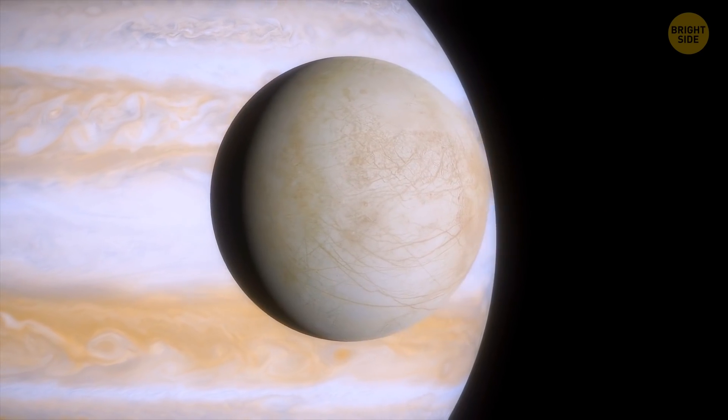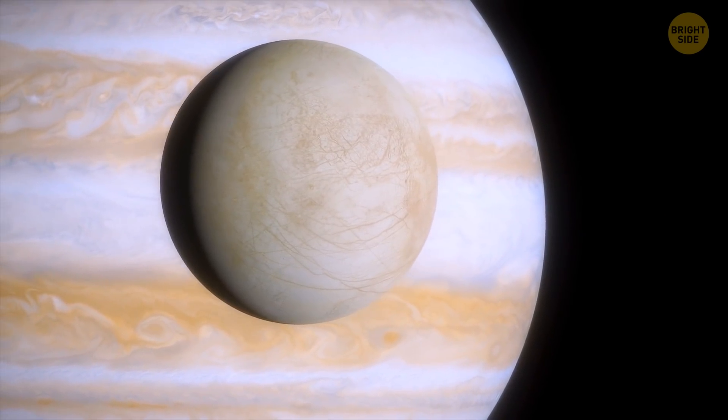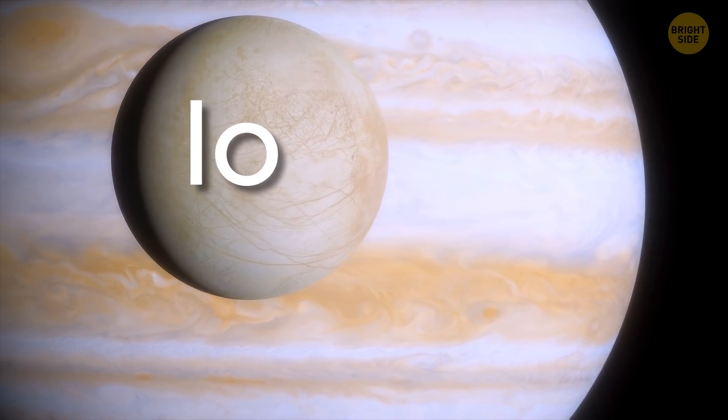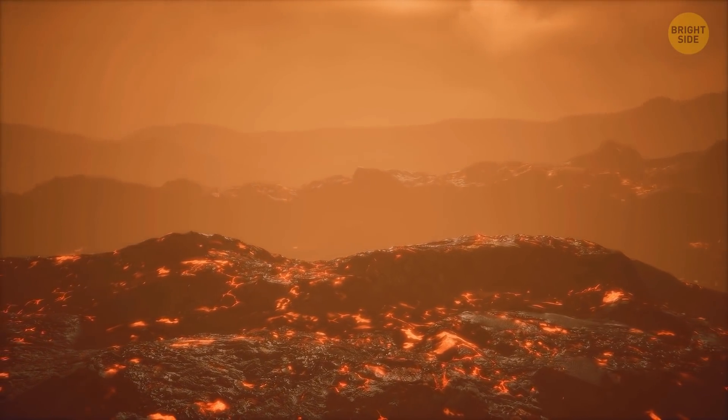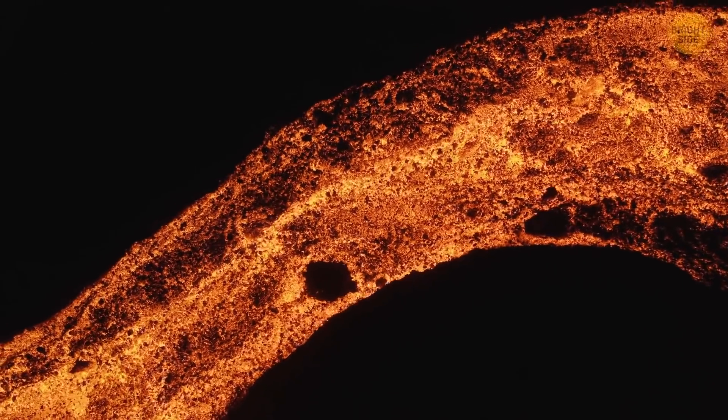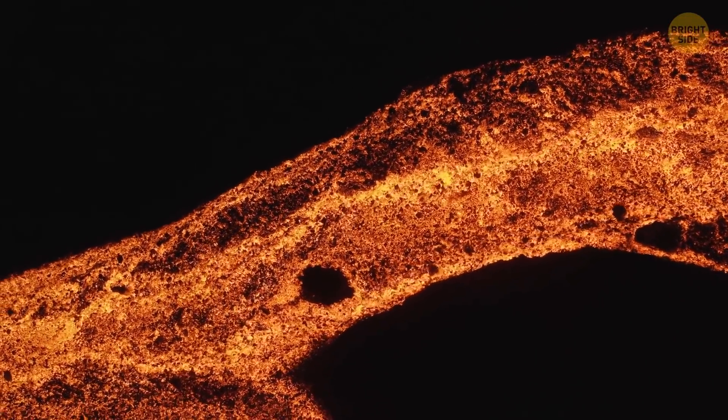Europa is not the only Moon where this is happening. Another of Jupiter's moons, Io, is also warm because of such tidal forces. Io also has volcanoes erupting from within all the time. So it's not only that the Sun warms the space bodies and pumps them with energy.